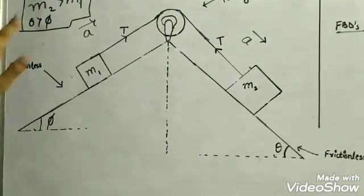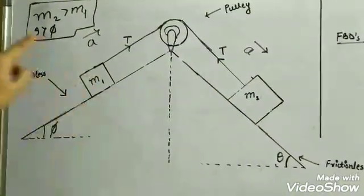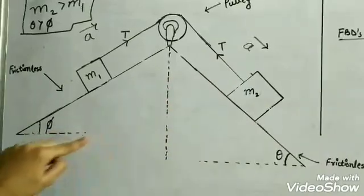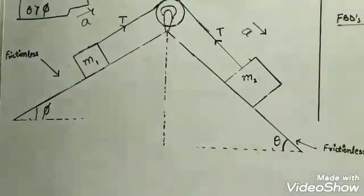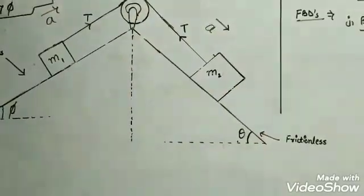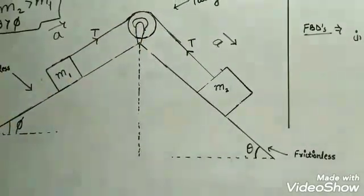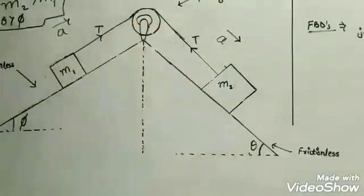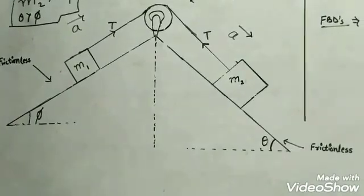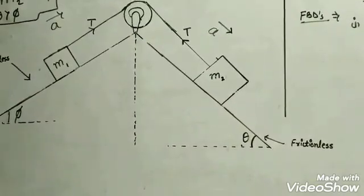It has been given that m2 is greater than m1, meaning this block is heavier than this one, and theta is greater than phi, meaning this plane is steeper than this one. What we have to find is first the acceleration with which the system will move — the motion will be downward here and upward in this plane — and the second is to find the tension in the rope. Let's begin our solution by drawing the free body diagrams of both blocks.